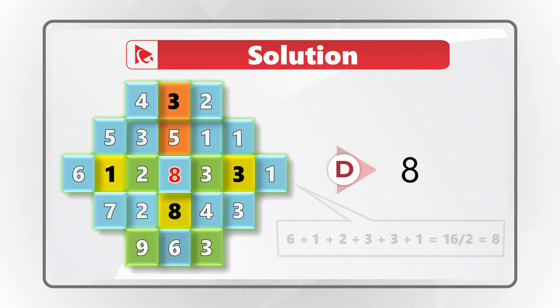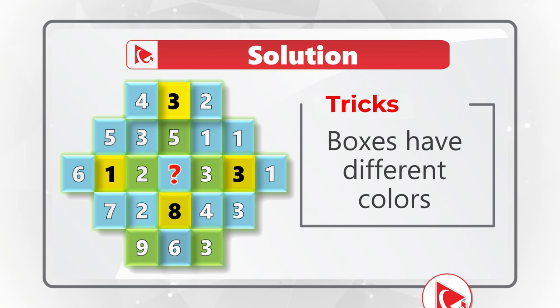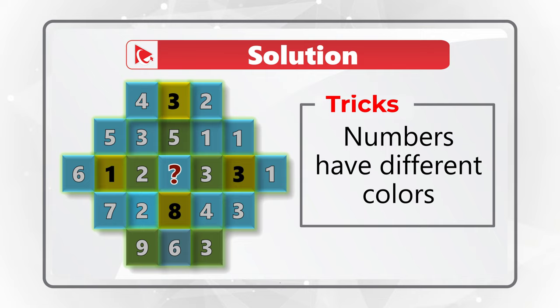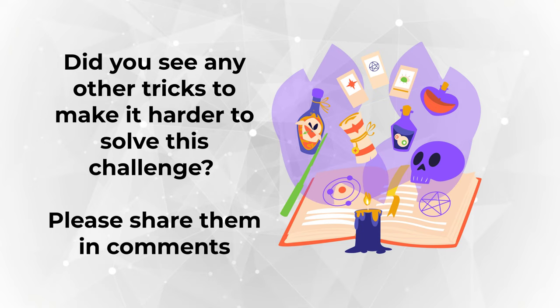Let's look at some tricks that question designers introduced to confuse you. You can see that the boxes have different colors — blue, yellow, and green. None of this matters because it contributes nothing to the pattern calculations. You also see that some numbers are of a different color: all numbers in yellow boxes are black, while numbers in blue and green boxes are white. This is a similar trick which contributes nothing to pattern detection.